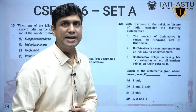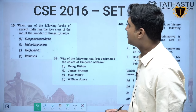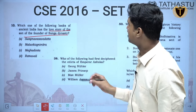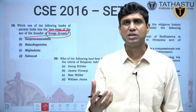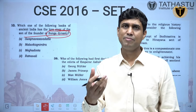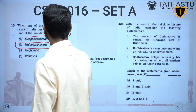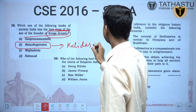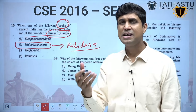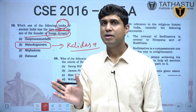Let us begin the trend analysis with 2016 questions. The first question: which one of the following books of ancient India has the love story of the son of the founder of the Sunga dynasty? Pusmitra Sunga was the founder and his son was Agni Mitra. Agni Mitra fell in love with Malvika, a female servant. This is about Malvikagnimitra, written by Kalidasa. So UPSC is asking questions related to books.